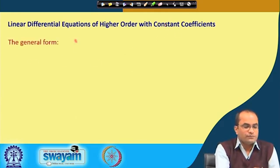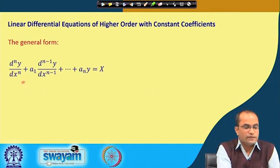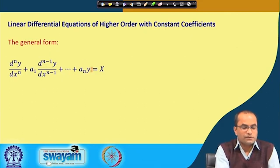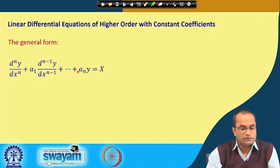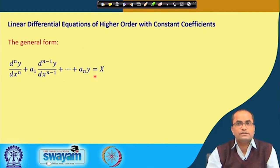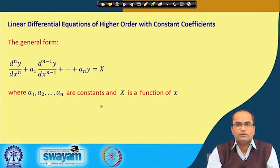The general form of such differential equations we will be talking about in today's lecture is the nth derivative of y, plus a1 (a constant) times the (n−1)th derivative of y, continuing up to the y term with constant coefficient a_n. The coefficients a1, a2, a3, ..., a_n are constants, and the right-hand side function x can be a function of x — or also a constant, but in general we take it as a function of x.